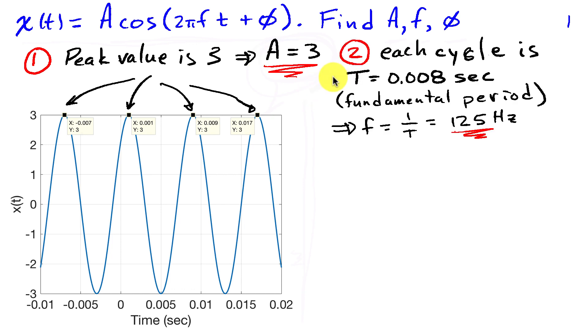Next, the second thing we're going to do is look to find the frequency of the sinusoid, and to find the frequency, we need to identify the length of each cycle, or the length of one period of the sinusoid, and that would be the time it takes to go from one peak to the next peak. We can see from the data cursors that that distance is 0.008 seconds, or 8 milliseconds, so capital T, the fundamental period is 8 milliseconds. The frequency is 1 over the period, and so that's going to be 1 over 0.008, or 125 hertz.